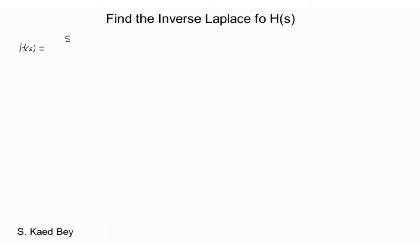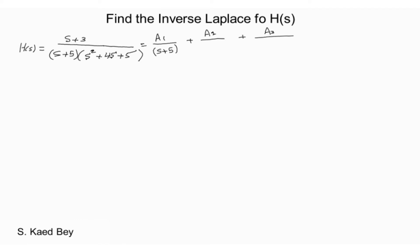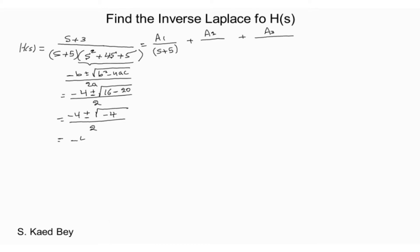Another case that often comes up is that of a complex conjugate root. Consider the fraction H of S. Notice the second term in the denominator cannot be factored into real terms. This leaves us with two possibilities: either deal with complex roots in the partial fraction, or keep the second-order term in the denominator with a numerator that is a first-order polynomial. In this exercise, we will factor the second term into a complex root and solve both by hand and verify using MATLAB.